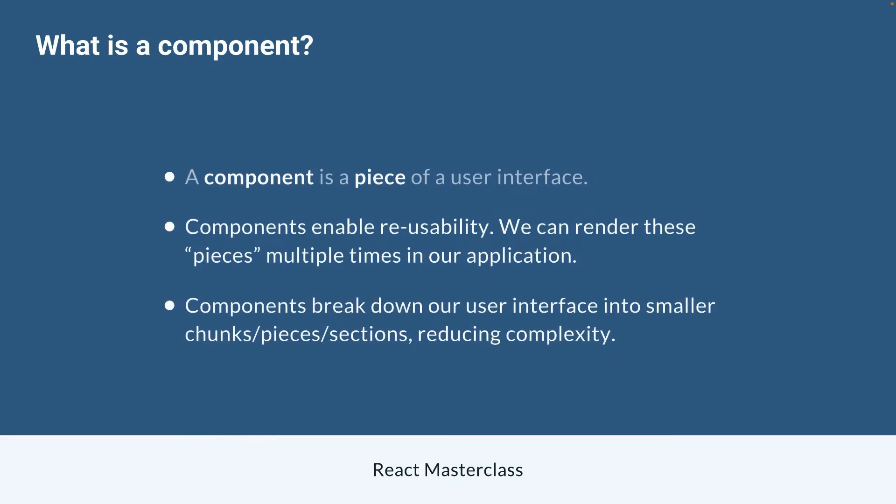The easiest way to describe a component is just a piece of the user interface — a chunk or a section of the user interface. The best analogy is a jigsaw puzzle. A jigsaw puzzle consists of multiple smaller pieces that we add together to form the puzzle. Imagine your webpage like a jigsaw puzzle and the components as the puzzle pieces that we plug in together to make the final webpage.